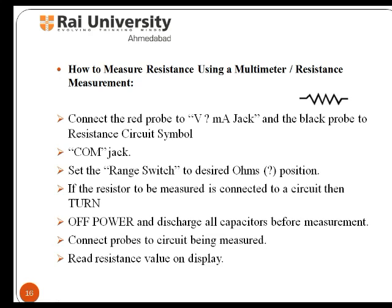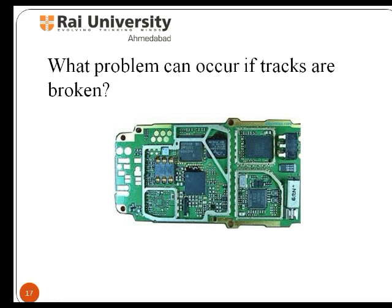To measure resistance, first connect the red probe to the MA jack and the black probe to the resistance circuit symbol. Then set the range switch to the desired ohm position. If the resistor to be measured is connected to a circuit, turn off power and discharge all capacitors before measurement, then connect the probes to the circuit being measured. Finally, read the resistance value on the display of the multimeter.